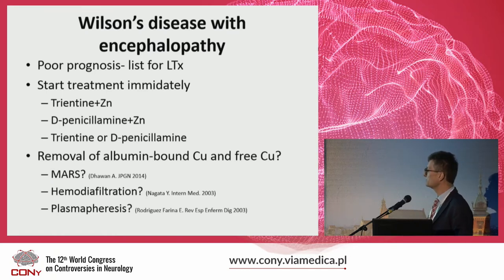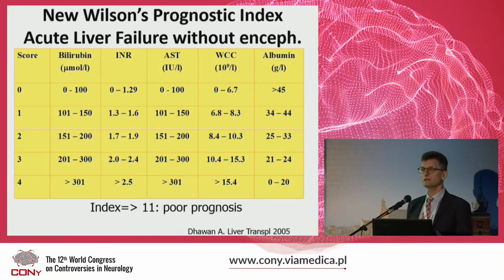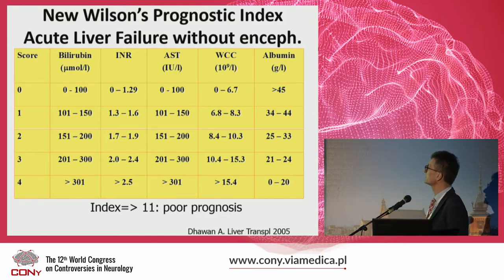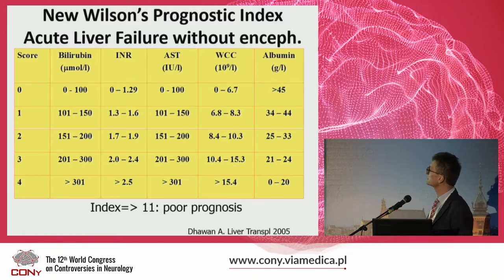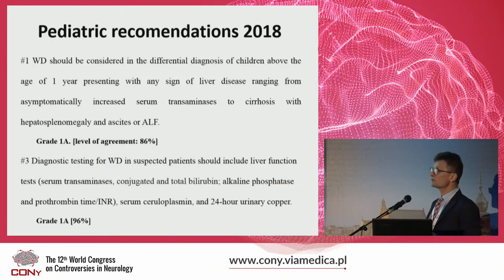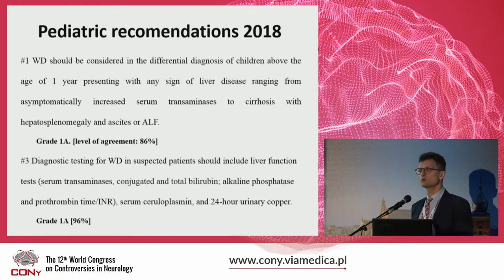How to make the decision on liver transplantation: King's College developed a very good prognostic index referring to bilirubin, INR, AST, white cell count, and albumin levels, with very high sensitivity and specificity. The cutoff value is 11.